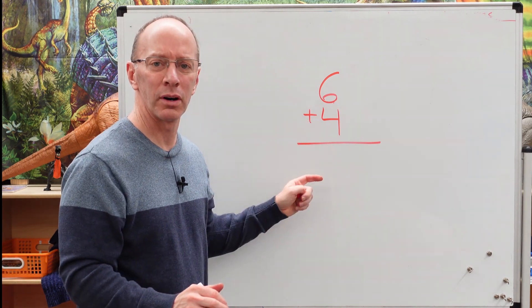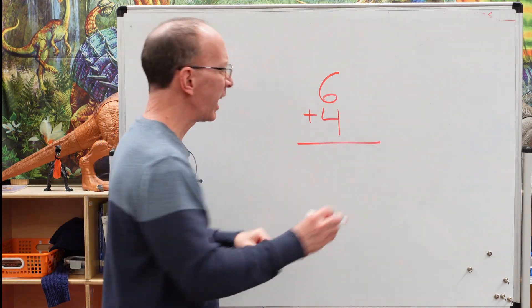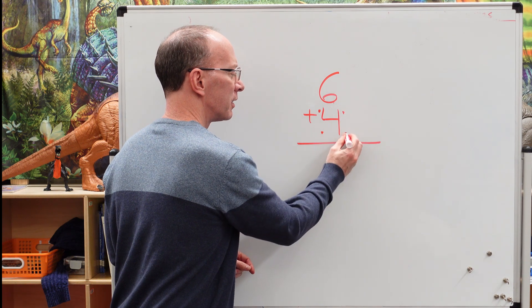We got six plus four. Remember, we always add the biggest number first. And with the four, I like to imagine four dots, something like this, like a dot here, there, there, there.